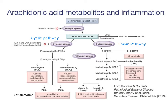With our eicosanoids, their formation starts with the cleavage of a 20-carbon arachidonic acid from the phospholipids that make up the cell membrane. This reaction is catalyzed by different phospholipase enzymes, which we'll look at in a minute.